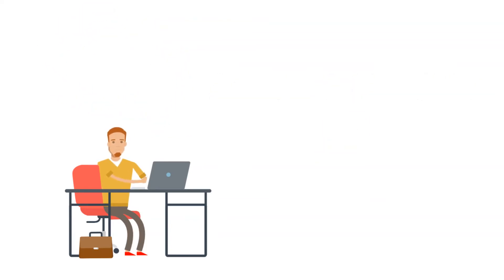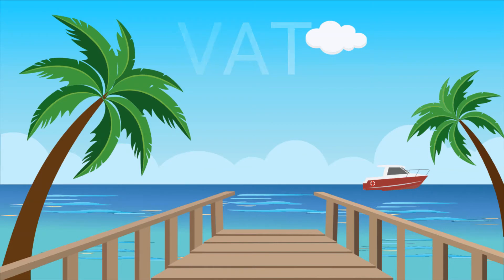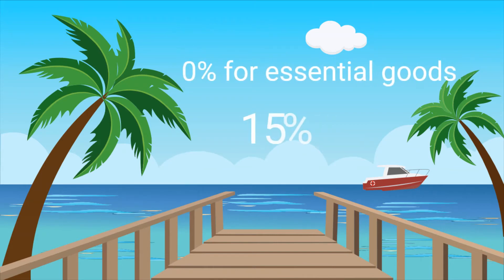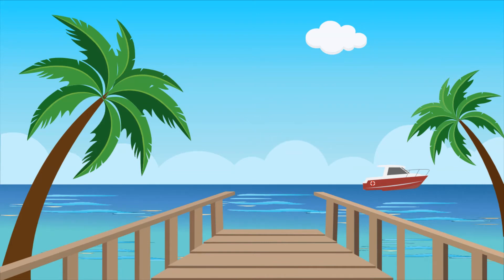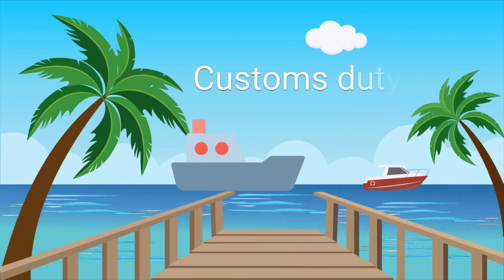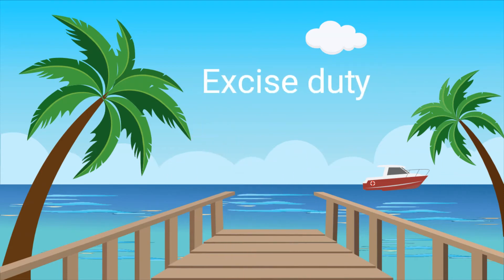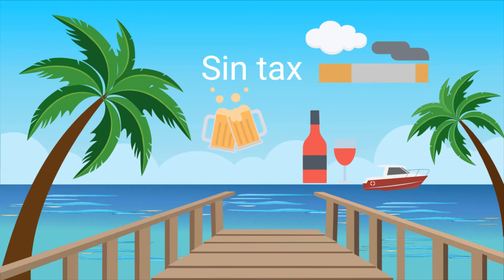Those are all of the direct types of taxes. Next is indirect tax. We first have value added tax, VAT. We are all very familiar with this type of tax. This is an indirect tax of 0% or 15% levied on goods and services. It is a pretty simple concept at first, but it does get complicated for the VAT vendor themselves. We then have customs duty, which is the tax on imported goods. And lastly, we have excise duty. Most people know this as sin tax. Excise duty is the tax on alcohol, etc.